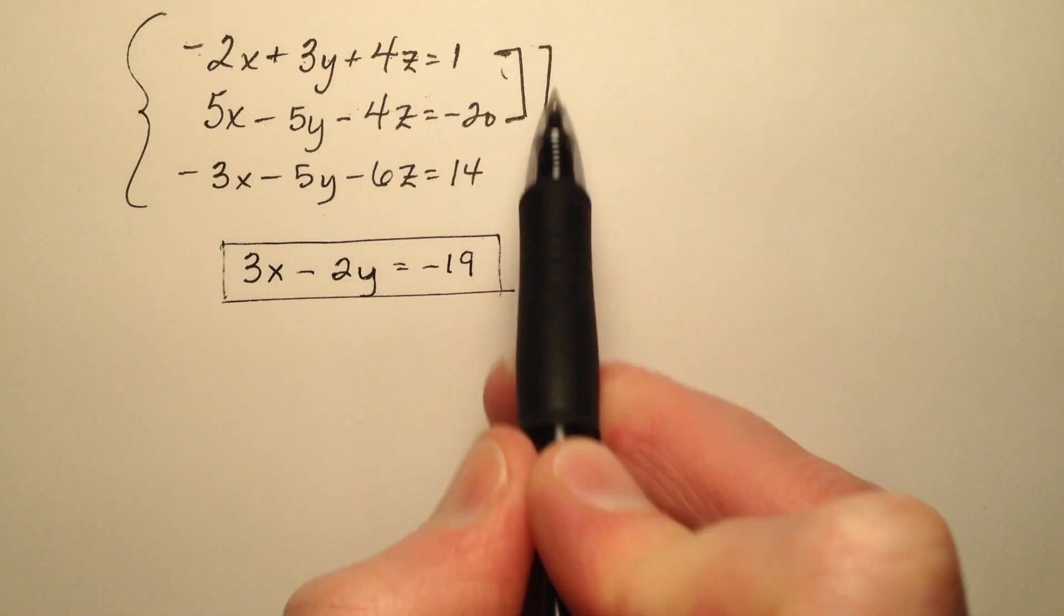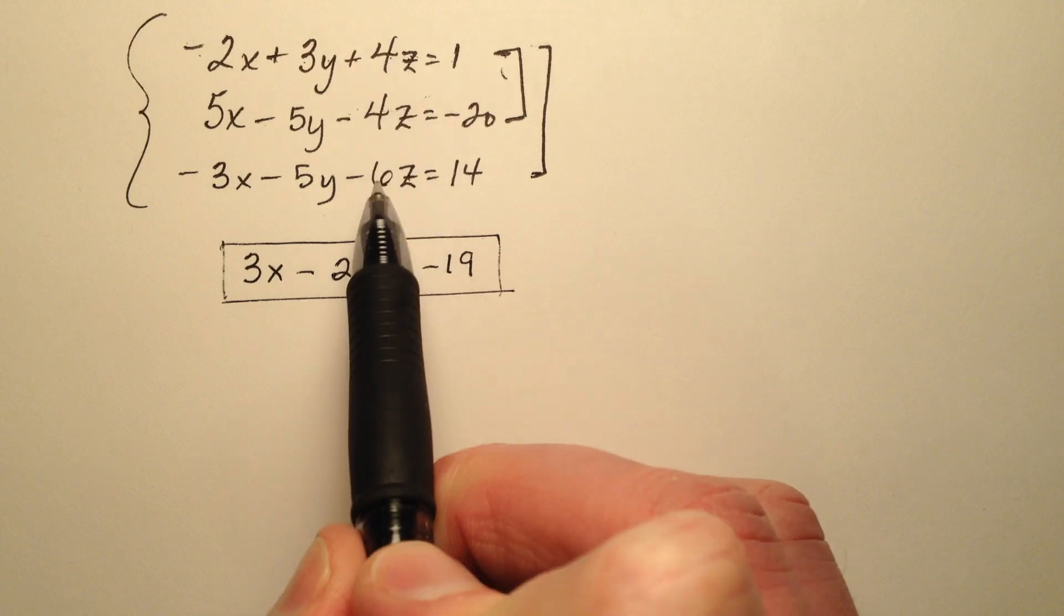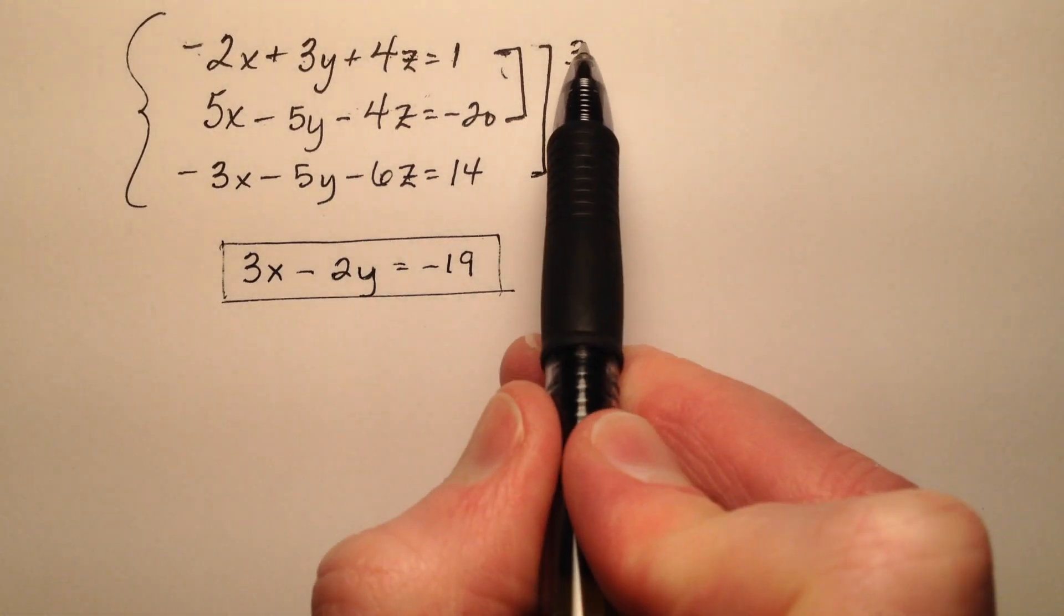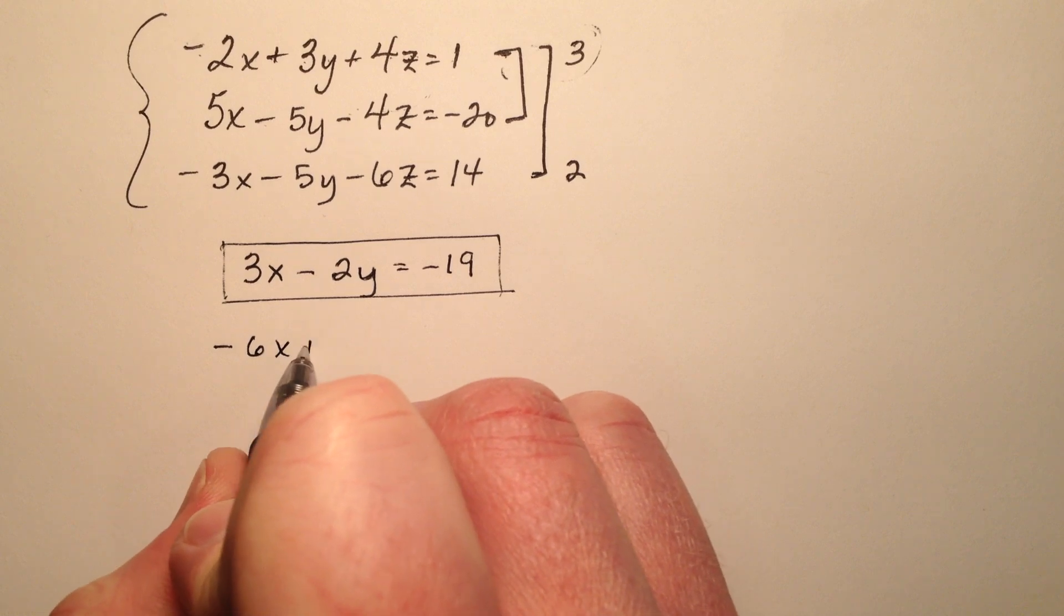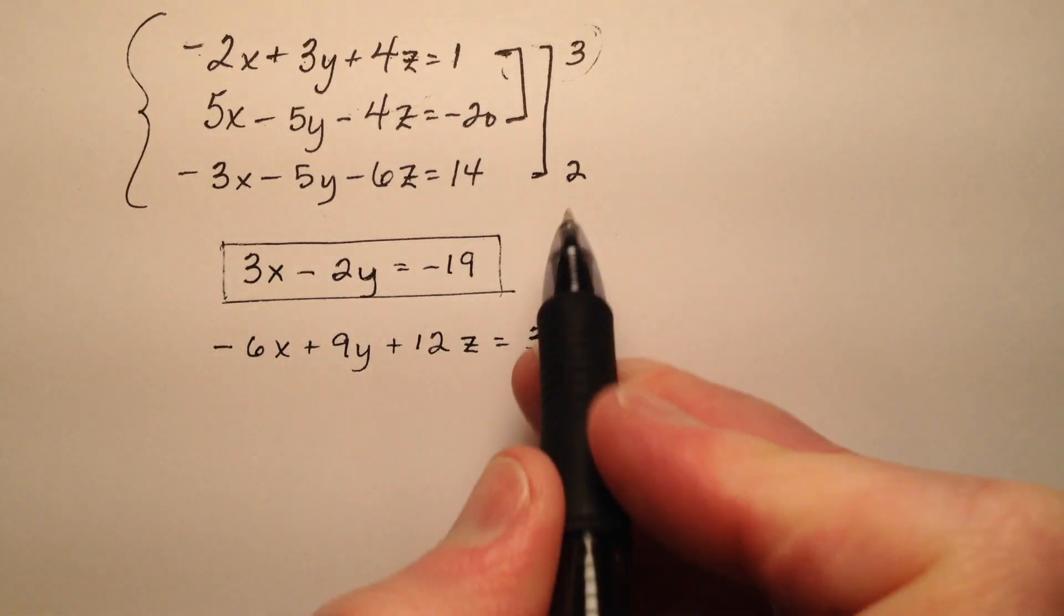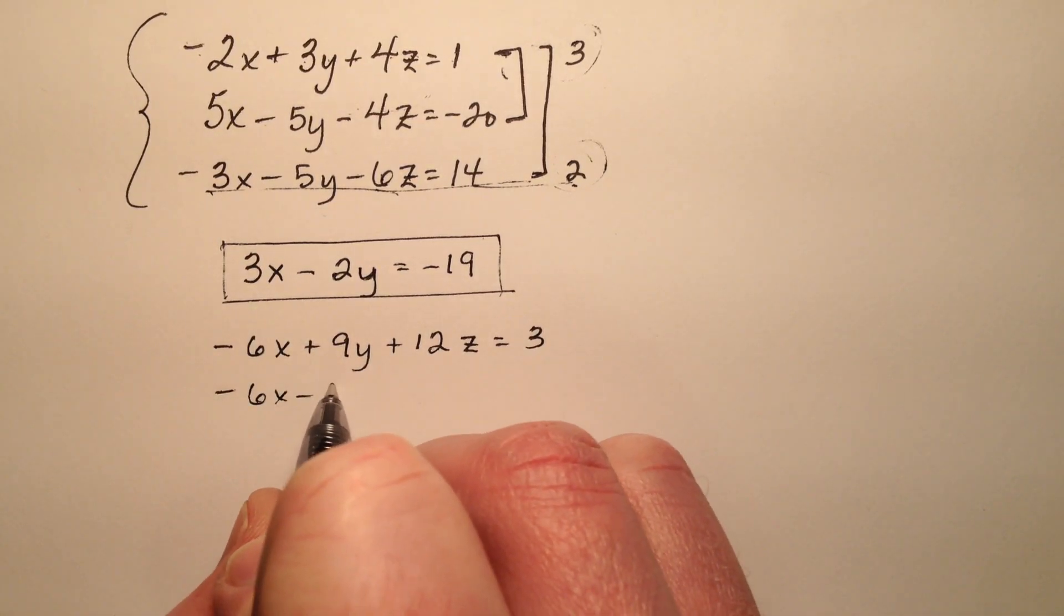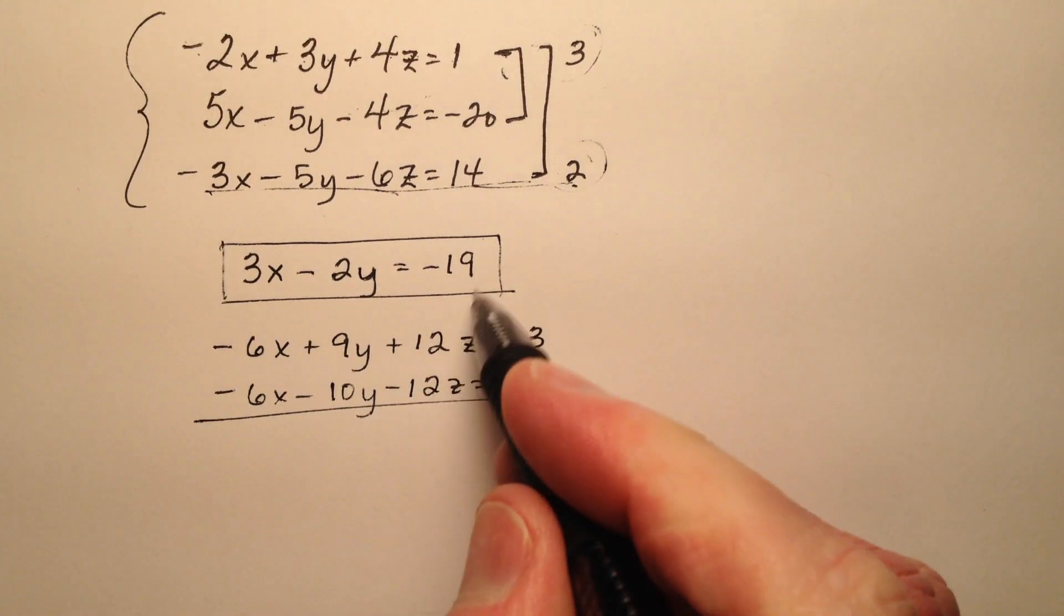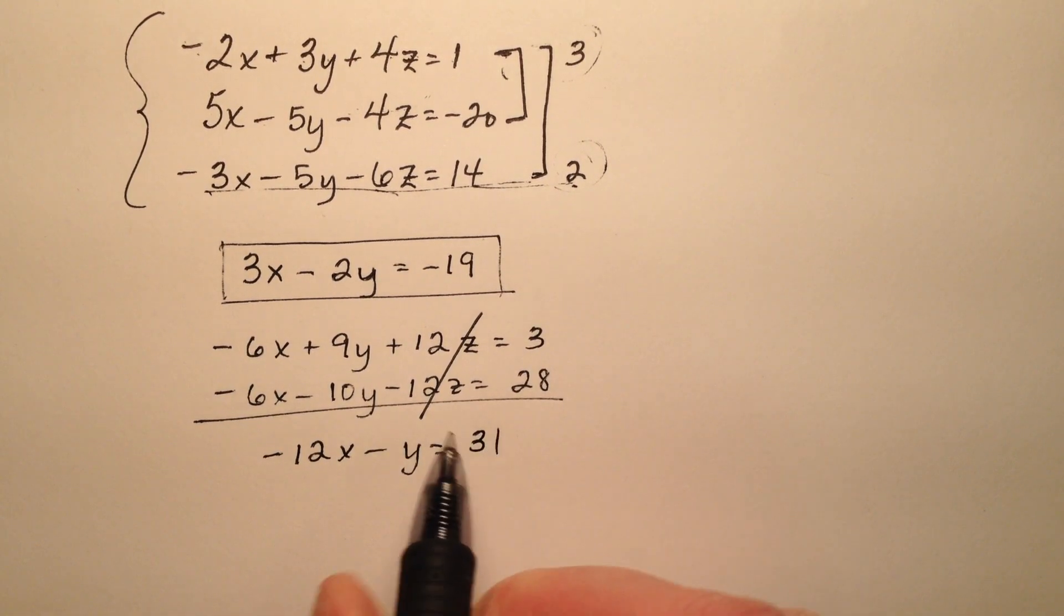Now I'm going to use the first and third equation. But to eliminate the z's I'm going to have to use a multiplier. So I'm going to get this 4 to a 12 and this negative 6 to a negative 12. So I'm going to multiply the first equation by 3 and the third equation by 2. So that means this 3 is going to be distributed to every single term. So negative 6x plus 9y plus 12z equals 3. And when we distribute the 2 through all the terms in the third equation I'm going to have a negative 6x minus 10y minus 12z equals 28. So when I add these together my z's will be eliminated. So I'll have a negative 12x minus y equals 31.